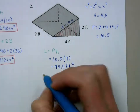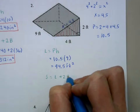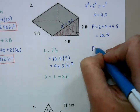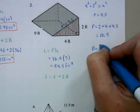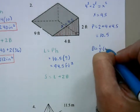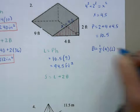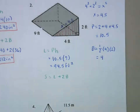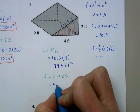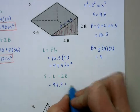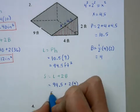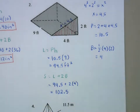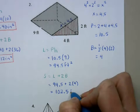The surface area is the lateral area plus 2B. The area of the triangular base is one half times base 4 times height 2, so the base has an area of 4. So this will be 94.5 plus 2 times 4, which is 102.5 feet squared.